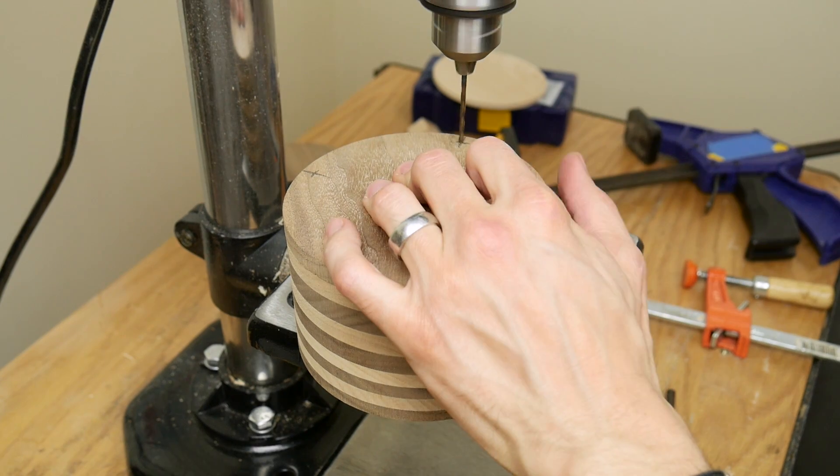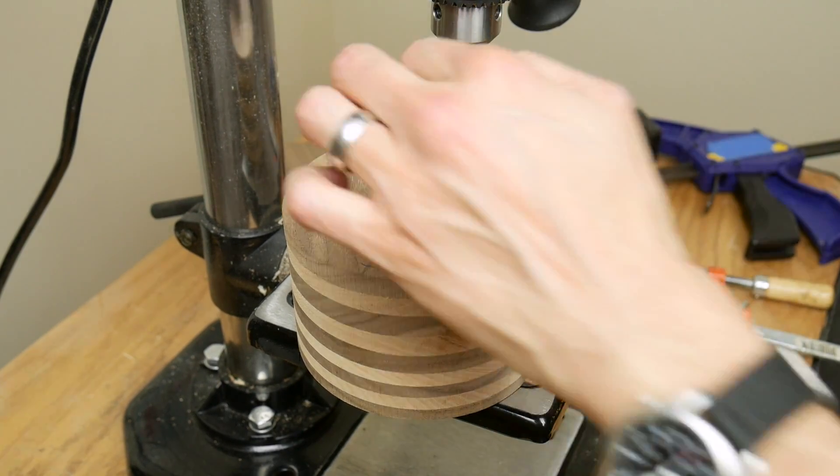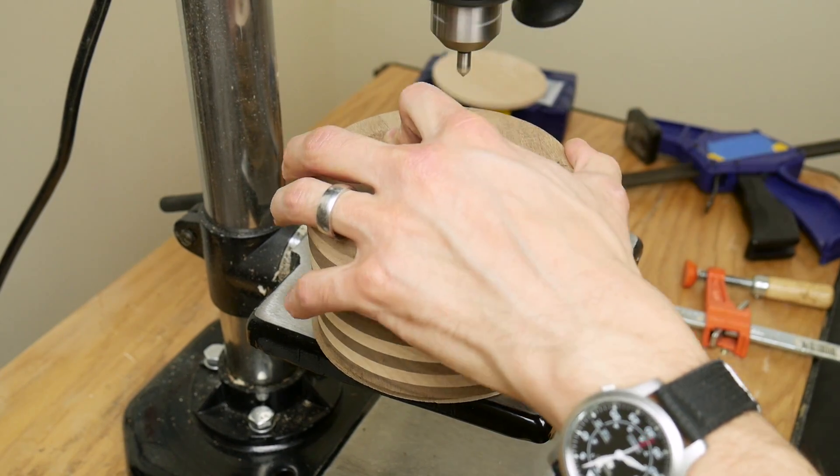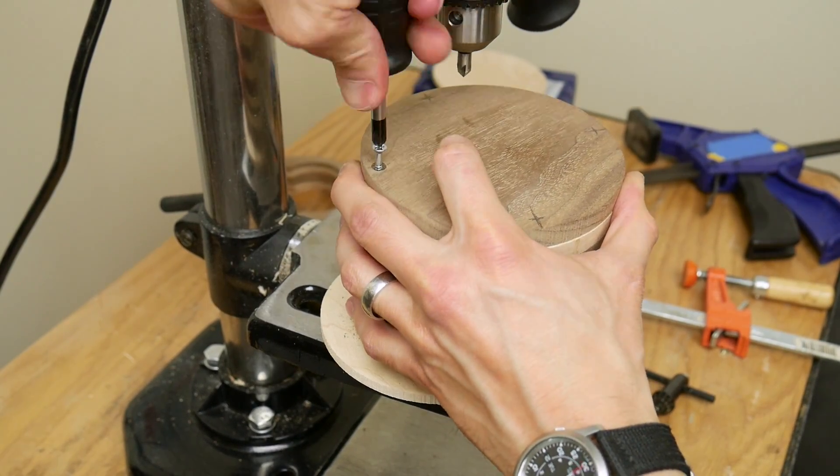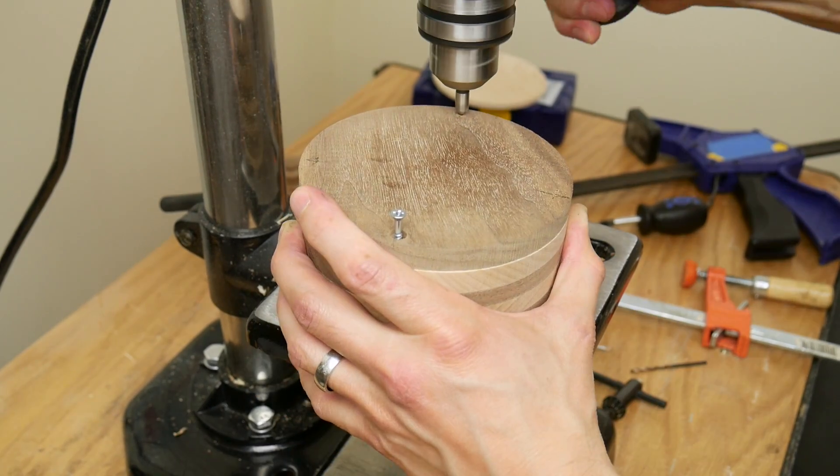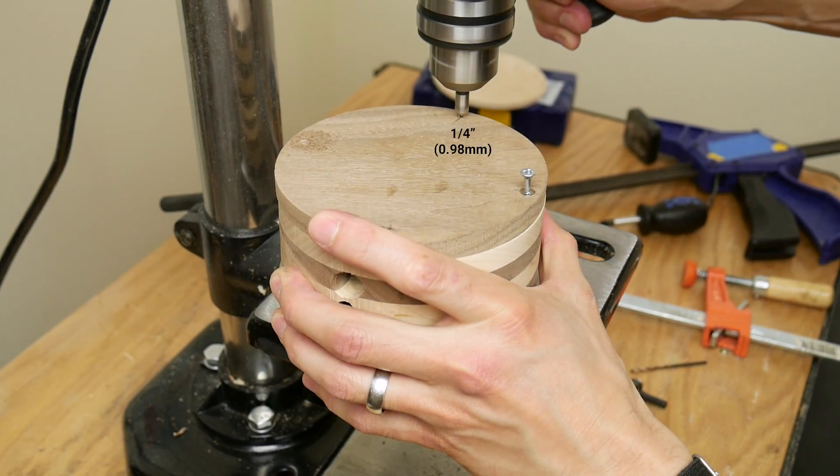I placed the bottom layer onto the bottom of the base and drilled three 3/32 inch pilot holes through the bottom layer and into the other layers. Then countersunk those with a quarter inch countersink bit.